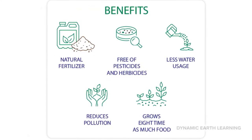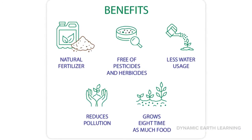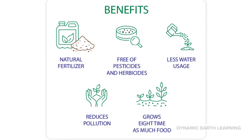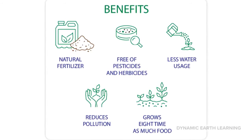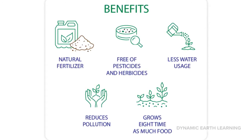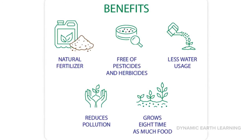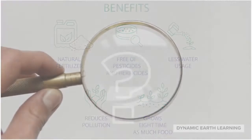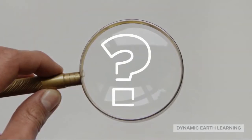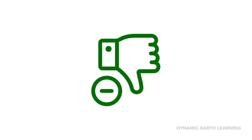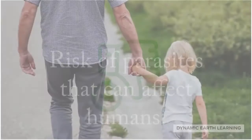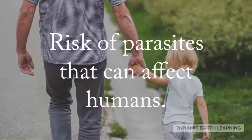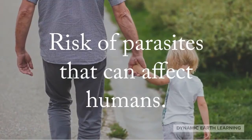Aquaponic growing methods have many positive benefits and outcomes, like being environmentally responsible and no chemical usage, but there's always another side to look at. There are disadvantages that require exploration and consideration as well. One such negative aspect is the risk of parasites that can affect humans.